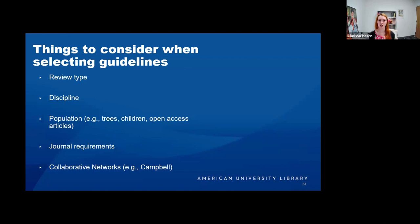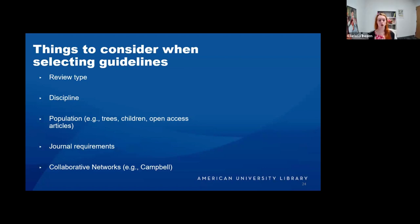When selecting your guidelines, most important is to pay attention to your review type — many guidelines are specific to systematic reviews. There is a PRISMA-S for scoping reviews, and many other review types have their own guidelines. Certain disciplines have their own guidelines, journal requirements may differ, and certain collaborative networks — such as the Campbell Collaborative — might have their own expectations and requirements.